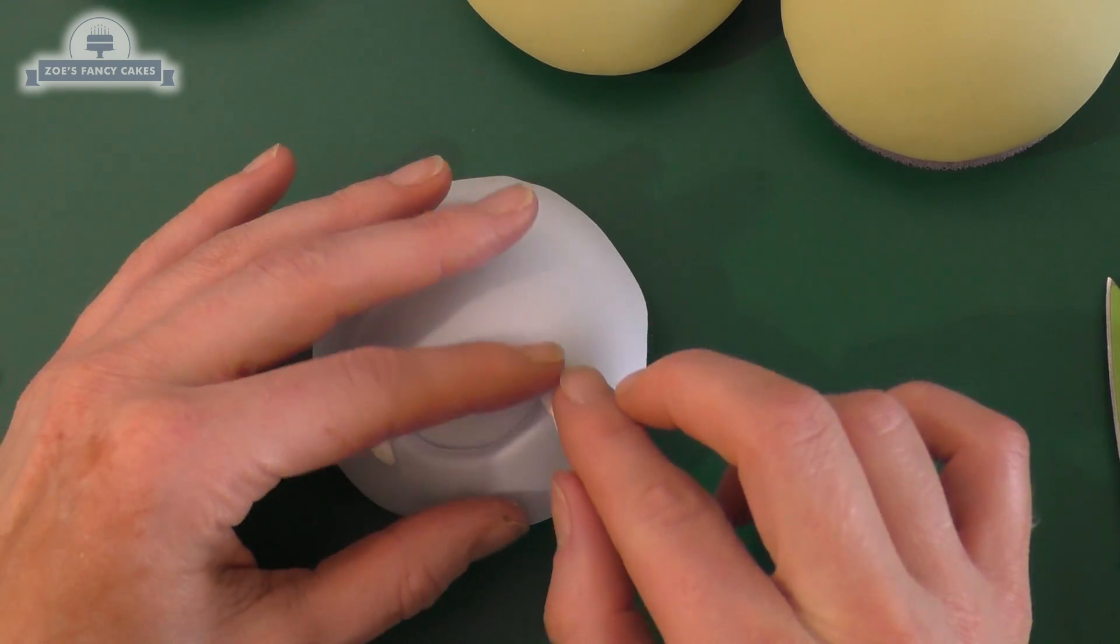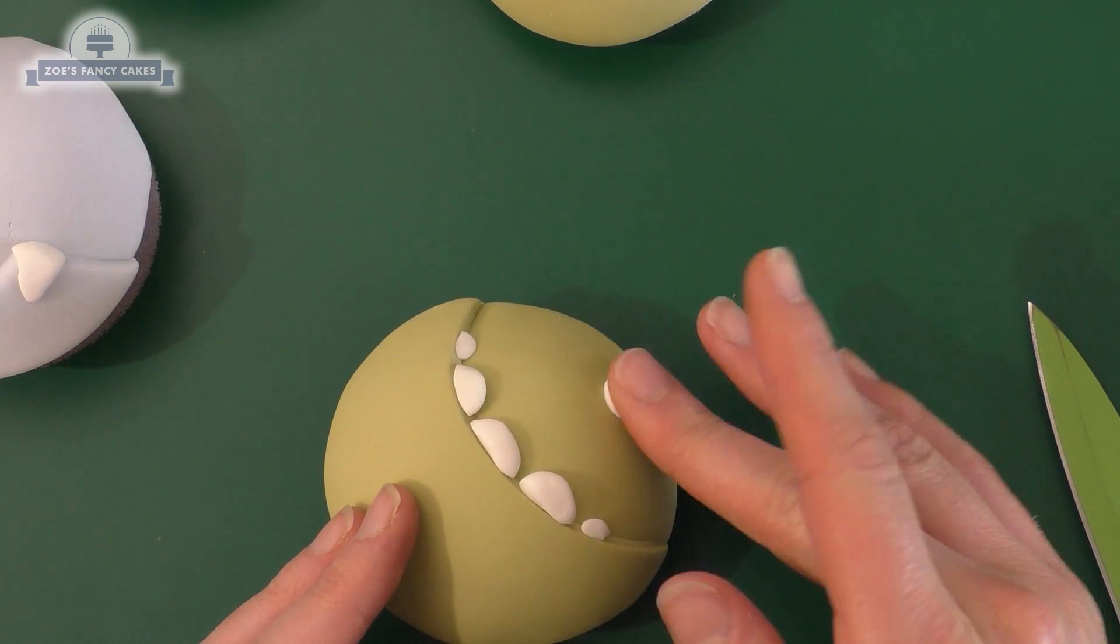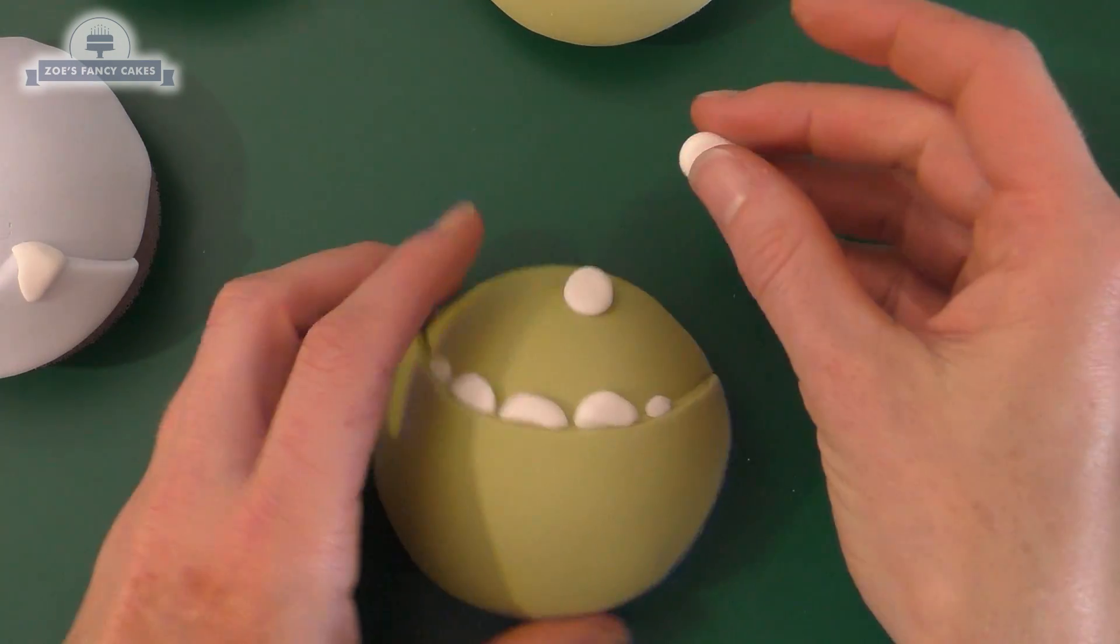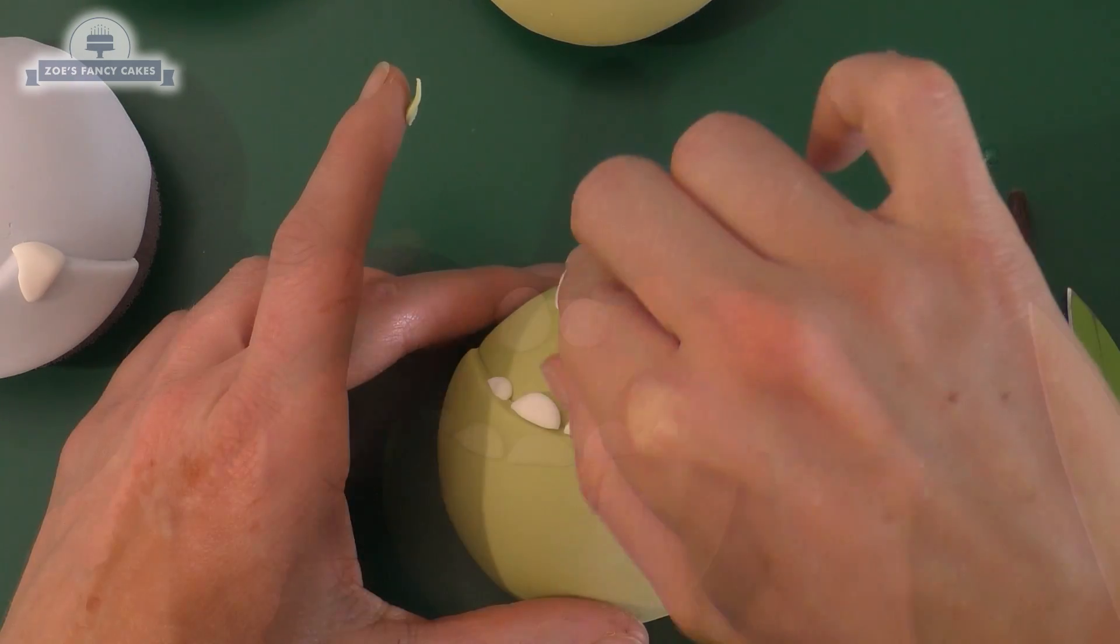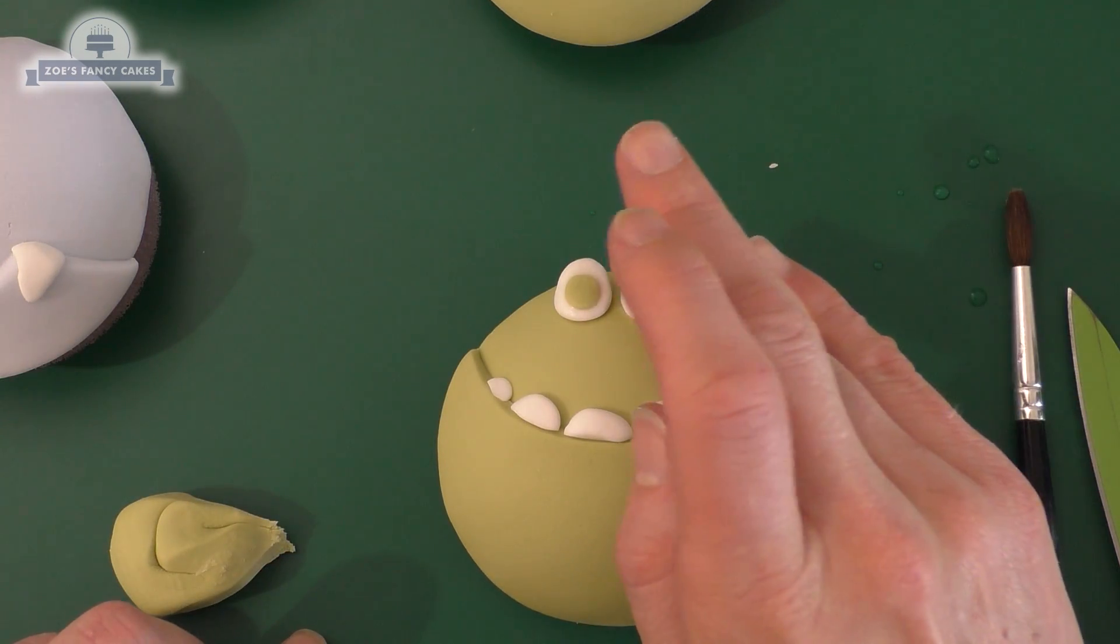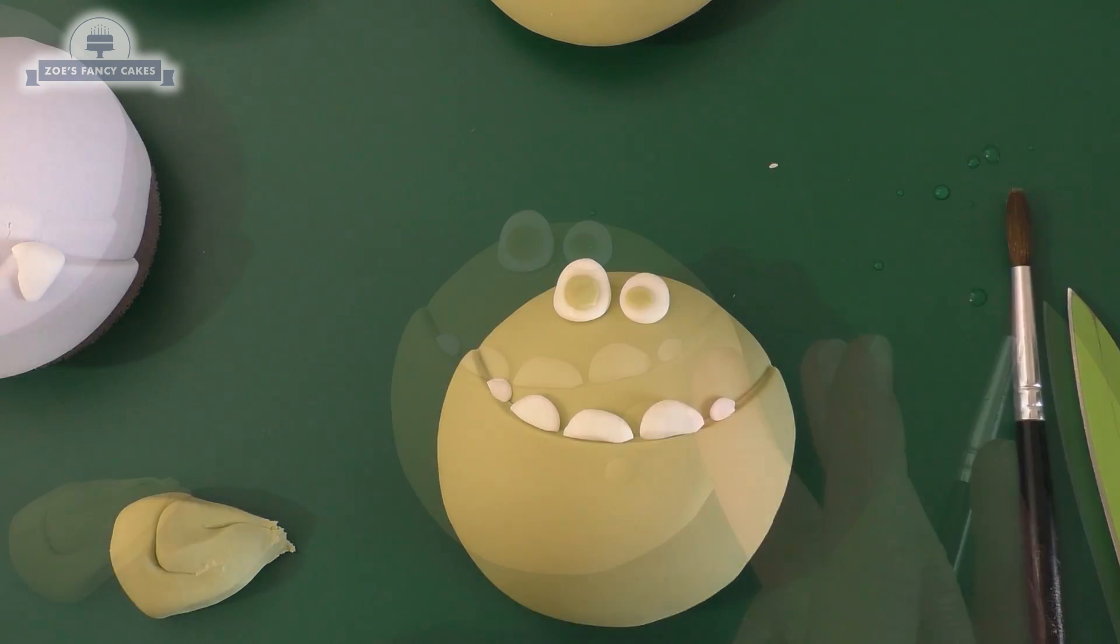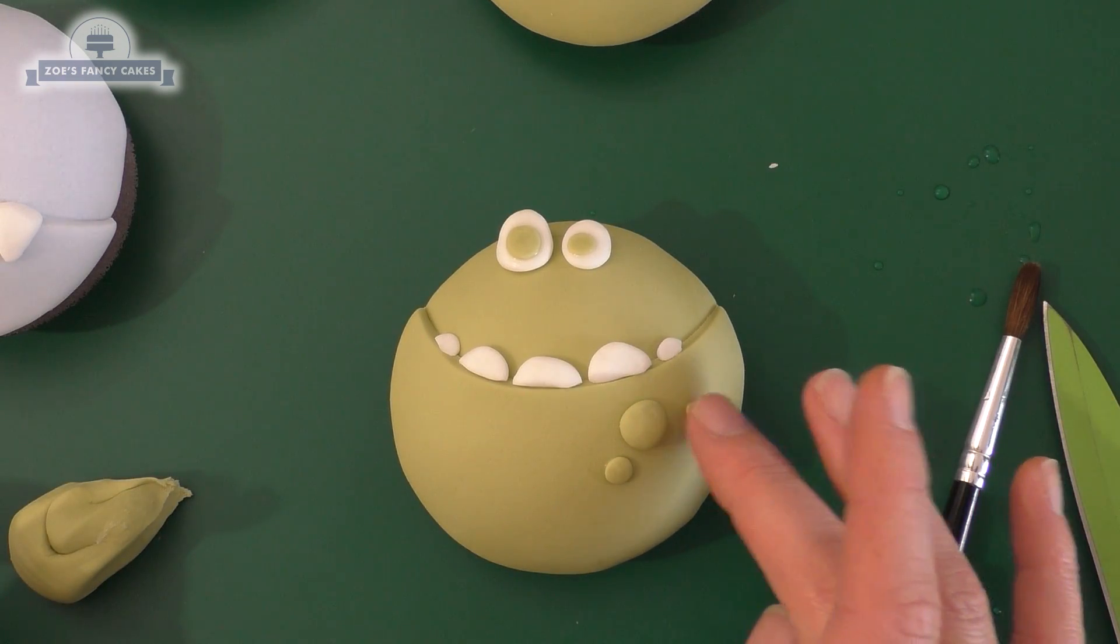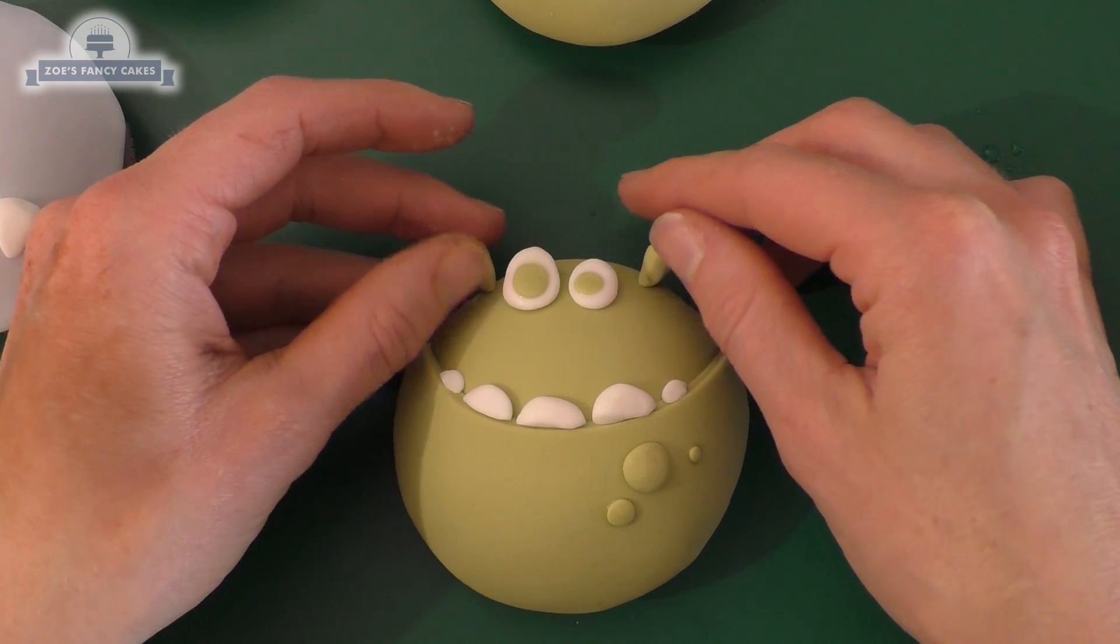Let's give him some fangs coming down, and then we're going to add some eyes. Just a ball of white fondant, squish it on. We'll do one eye a bit bigger than the other, just stick it with a little bit of water or edible glue. I've got some of the green left over from the face, so I'm just rolling a little ball pushing that into each eye. Then I'm rolling some balls of the green, we're going to give him some wart-like skin. Let's give him a couple of little tear drops for some little ears.